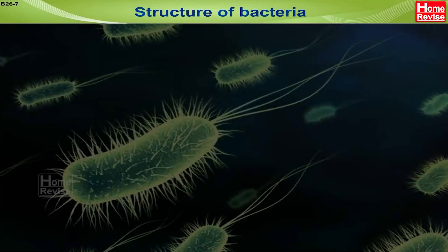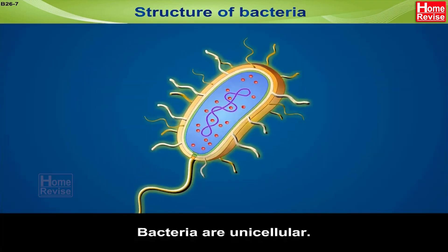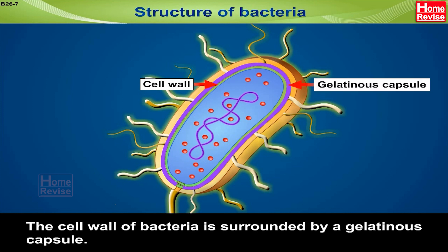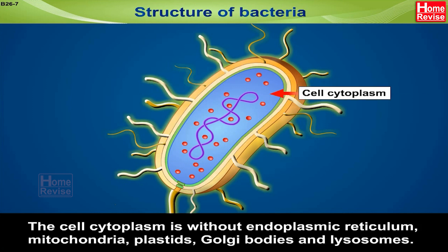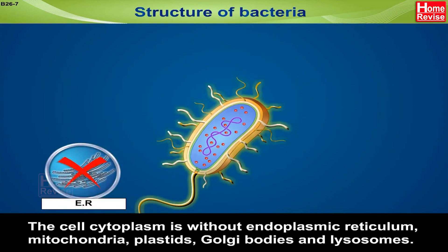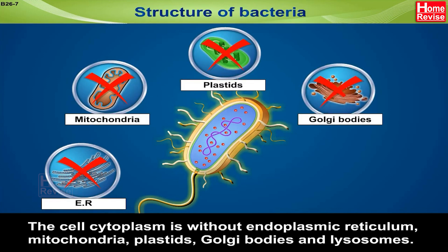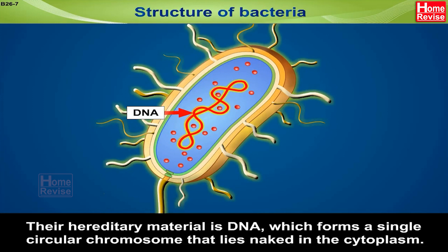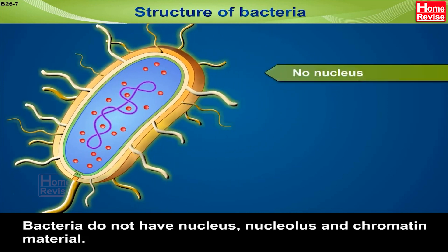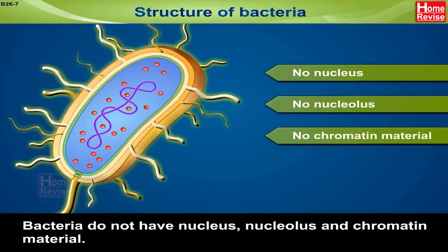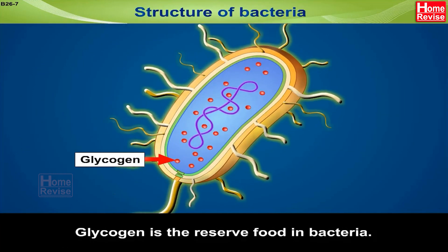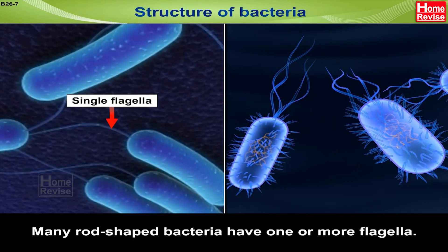Structure of Bacteria: Bacteria are unicellular. Their cell wall is made up of protein-like material and is surrounded by a gelatinous capsule. The cell cytoplasm is without endoplasmic reticulum, mitochondria, plastids, Golgi bodies and lysosomes. Their hereditary material is DNA, which forms a single circular chromosome that lies naked in the cytoplasm. Bacteria do not have a nucleus, nucleolus or chromatin material, and the nuclear membrane is also absent. Glycogen is the reserved food in bacteria. Many rod-shaped bacteria have one or more flagella.